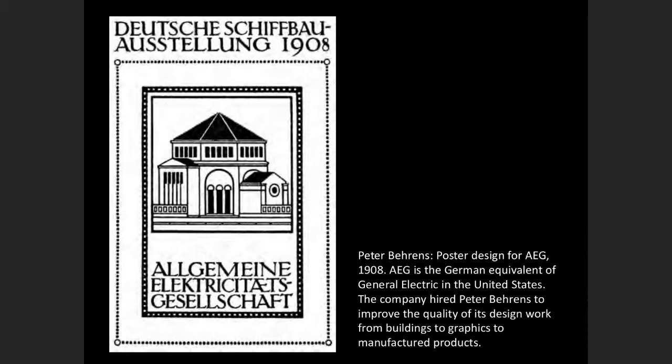One of Behrens's most influential projects and clients was the German company AEG, the equivalent of General Electric — the big lighting and electric power company that likely had the monopoly on stringing up power lines and providing electric lighting to German buildings in the early part of the 20th century, when electricity was really becoming a big thing. They were expanding rapidly, so he was charged with a number of architectural projects but also working on their graphics, logos, and corporate identity.